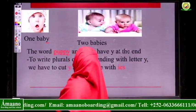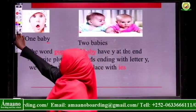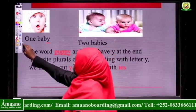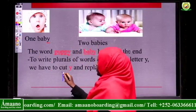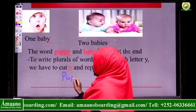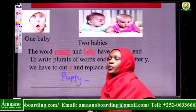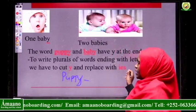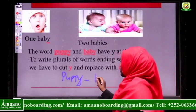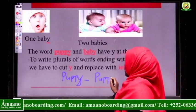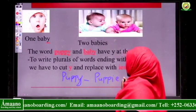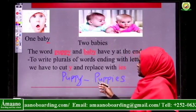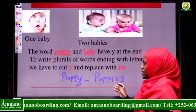We have to replace Y with I-E-S. We have to cut letter Y and replace it with I-E-S. For example, puppy — we have the word puppy. So what do we do? We have to remove letter Y and replace it with I-E-S. So puppy becomes, when there are many, we say puppies. You remove letter Y, copy the remaining letters, then at the end you add I-E-S.